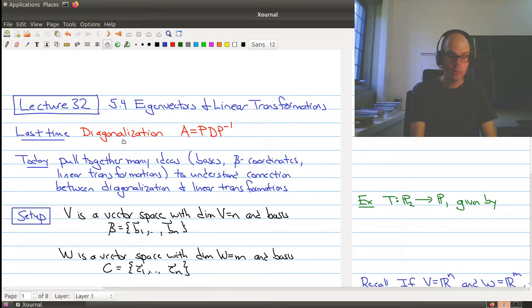The last two lectures we've been looking at diagonalization of a matrix. We've learned how to diagonalize a matrix. One nice way to think about this is it's a nice factorization where you can see the eigenvalues and the eigenvectors of your matrix at the same time.